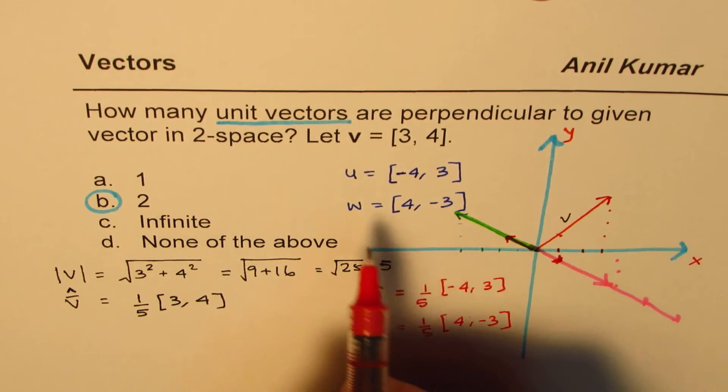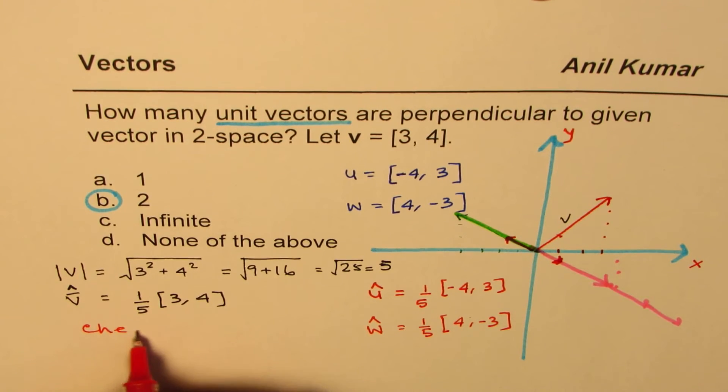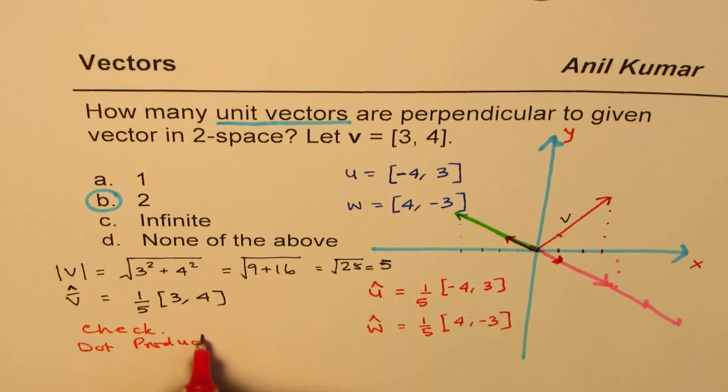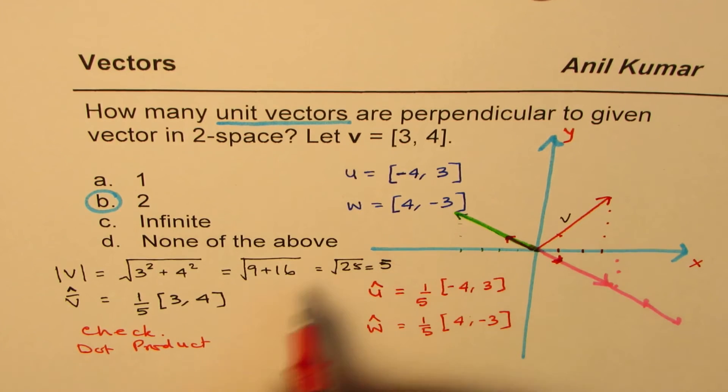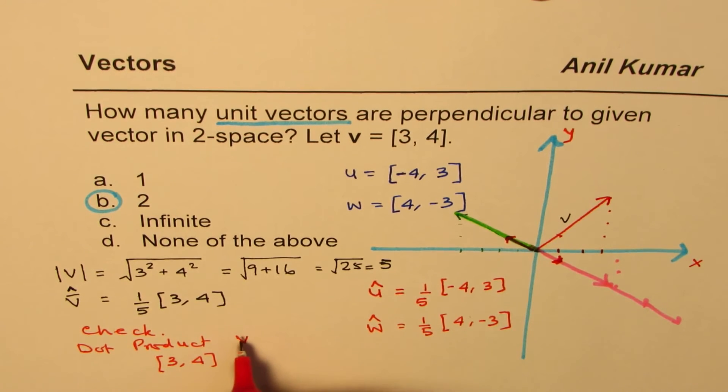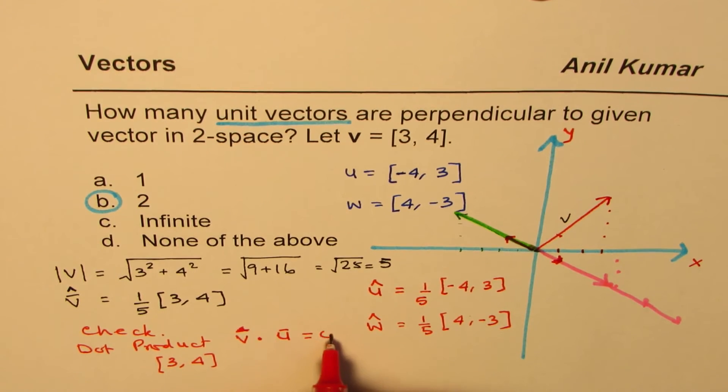What you can also do is check. How will you check? Check with dot product. What you will find is that [3, 4], the dot product of unit vector v dot—you can take the whole vector also—the dot product of this will be equal to 0.